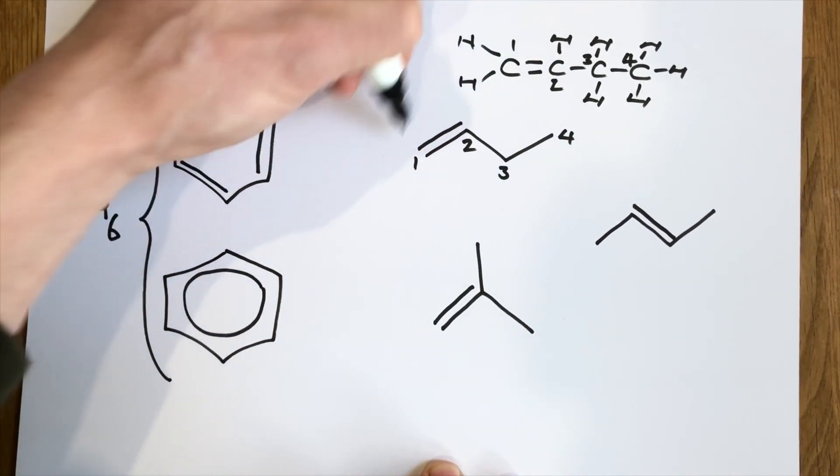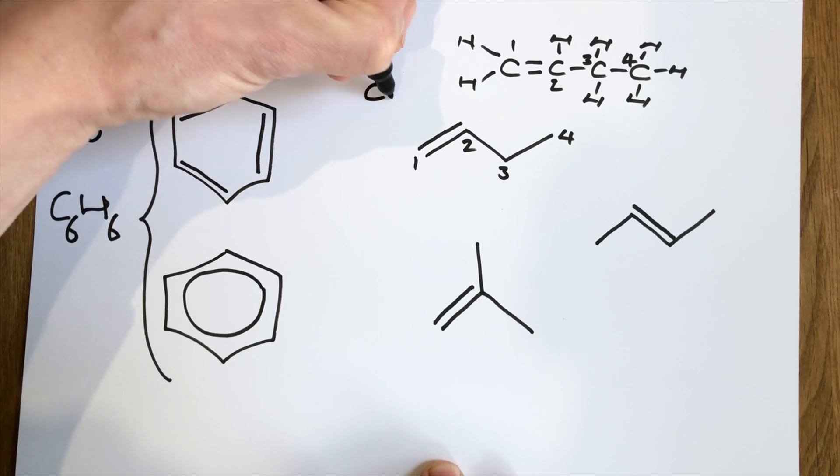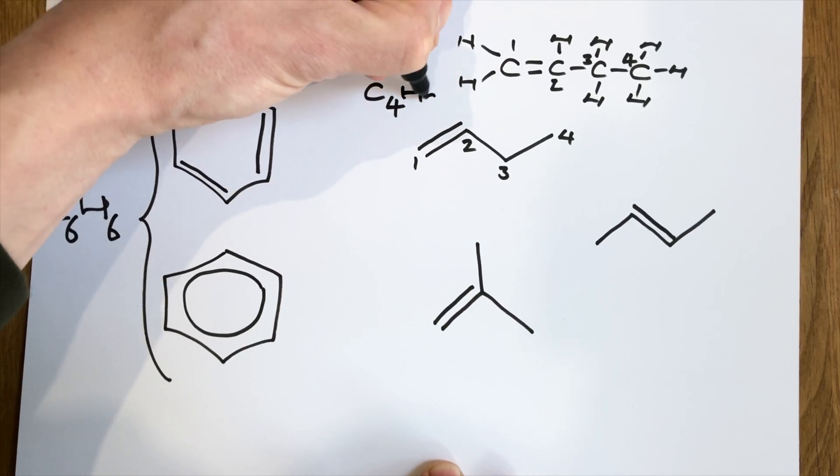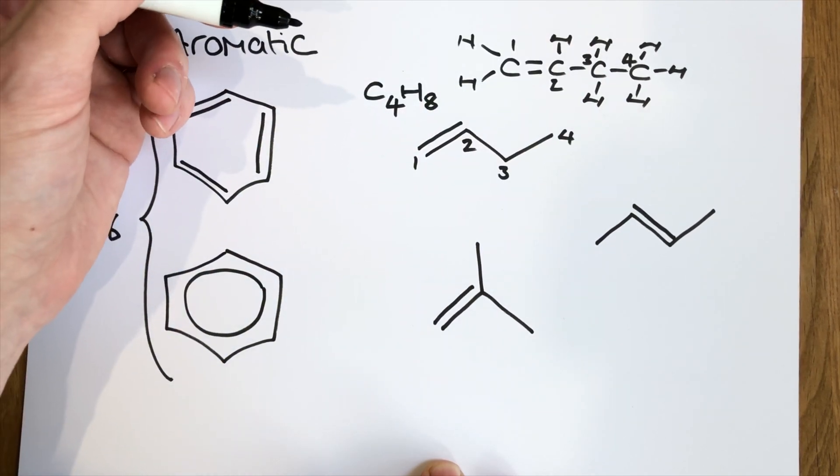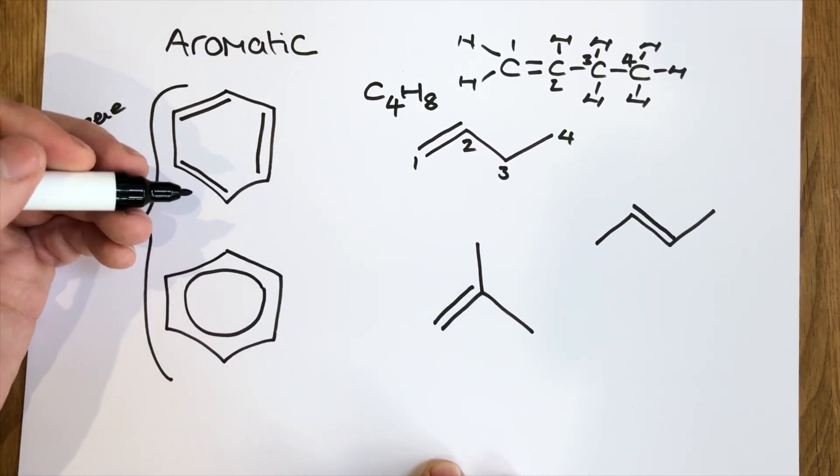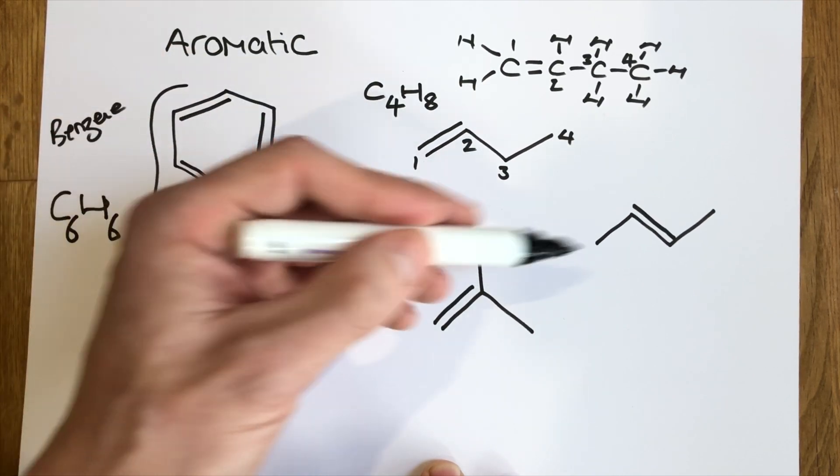The double bond here is this representation just drawn in skeletal. Now, the molecular formula of this one is C4H8. The molecular formula of this one is also C4H8. And weirdly, so is this one.